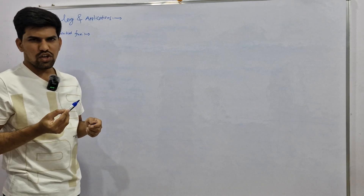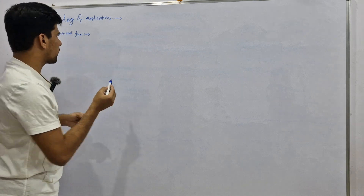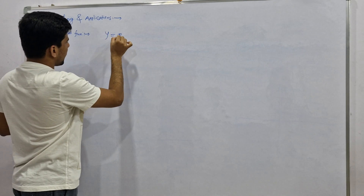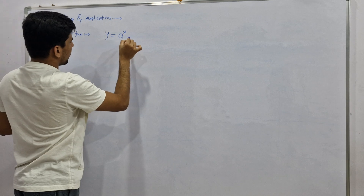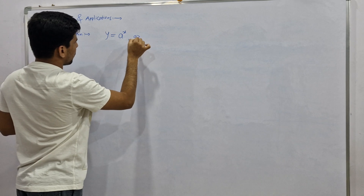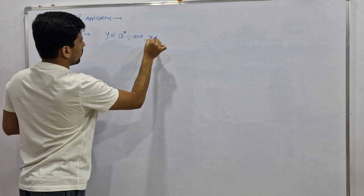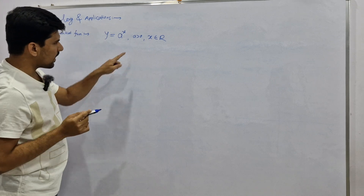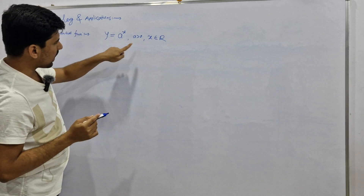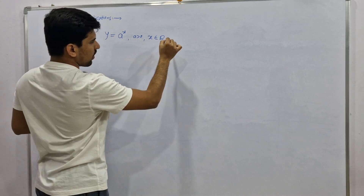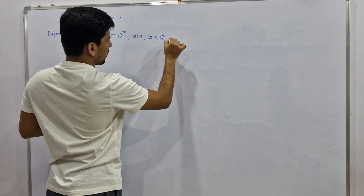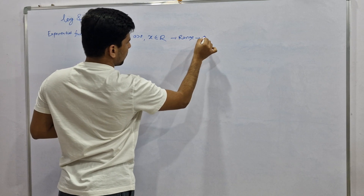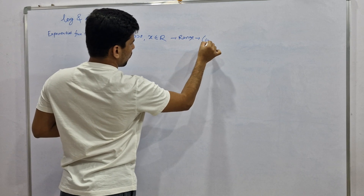What is the definition of an exponential function? The definition of an exponential function is a to the power x, where a is greater than zero and x belongs to R. Since a is greater than zero and x belongs to R, its range will be zero to infinity.